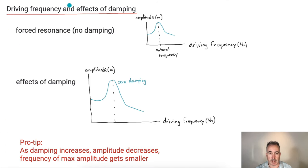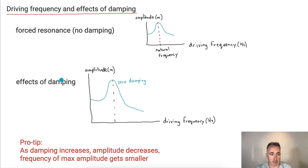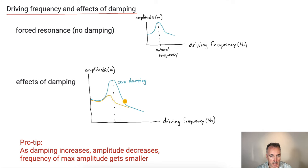Now let's talk about driving frequency and the effects of damping. We have forced resonance with no damping — as a reminder, if we look at amplitude vs. driving frequency and hit it at its natural frequency, the amplitude goes up to a sharp peak. That's the curve with no damping. If we have a little bit more damping, the peak will be lower. And with even more damping, the curve flattens further and the peak drops even more.